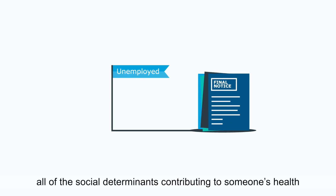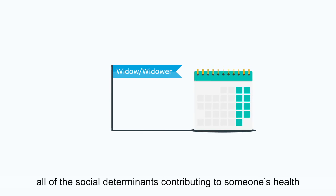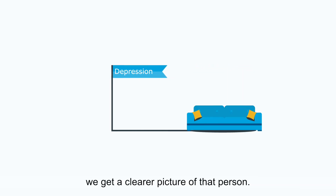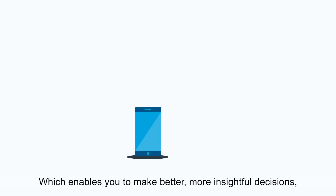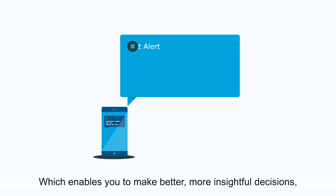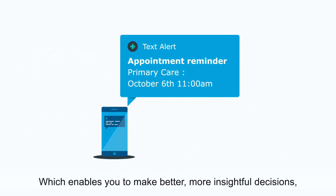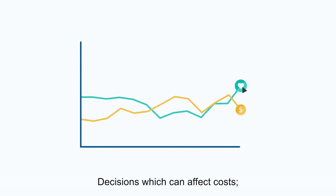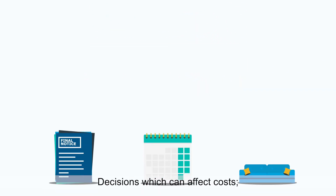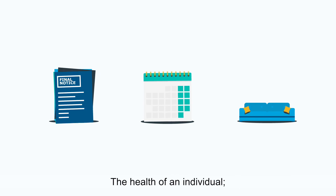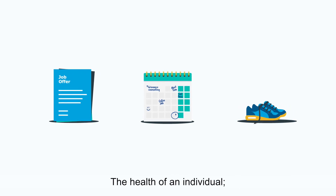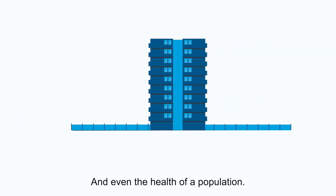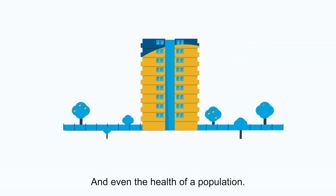By understanding all of the social determinants contributing to someone's health, we get a clearer picture of that person, which enables you to make better, more insightful decisions — decisions which can affect costs, the health of an individual, and even the health of a population.